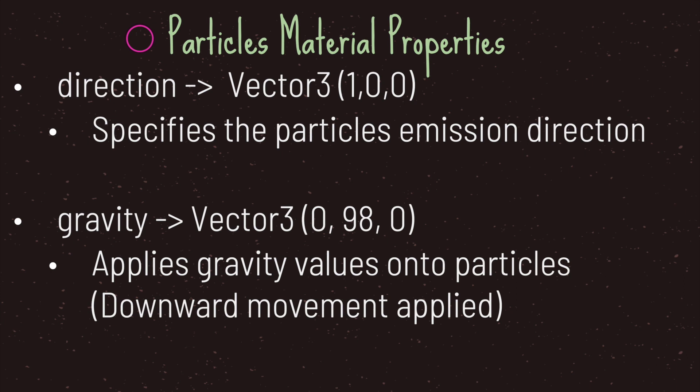Next we have the direction property and the gravity property. The direction property specifies the particle's emission direction. By default, the direction is set to emit towards the positive X axis. The gravity property applies its gravity values onto the particles. By default, the Y axis is set to 98, which means a downward movement is applied to your particles.